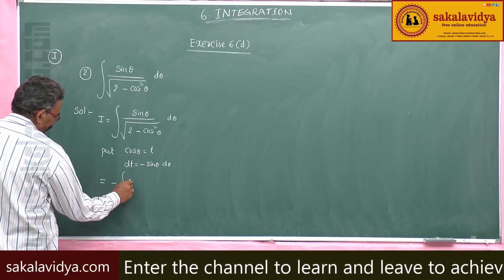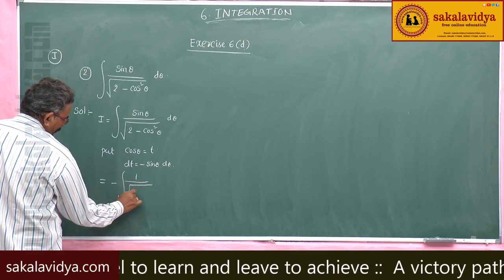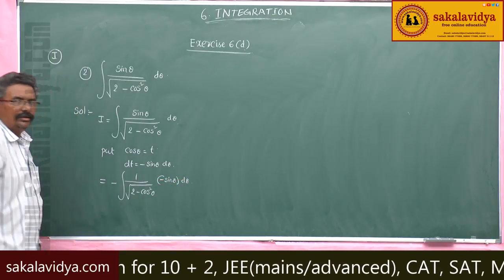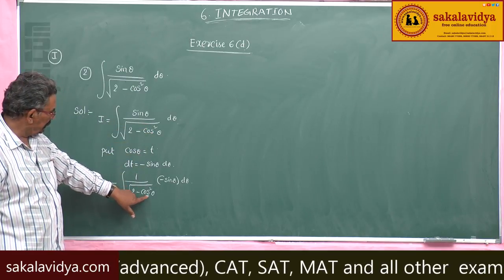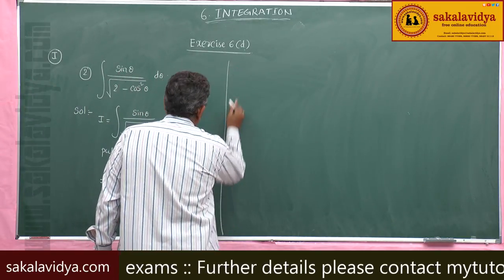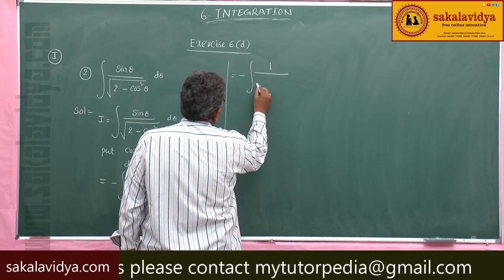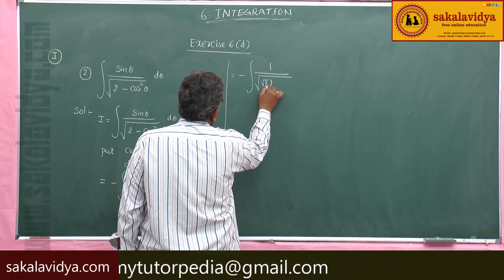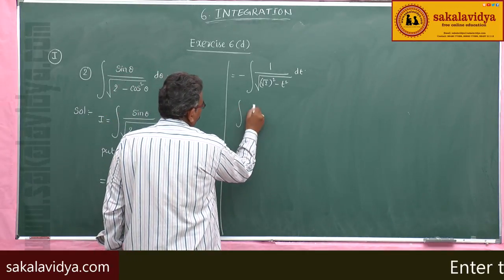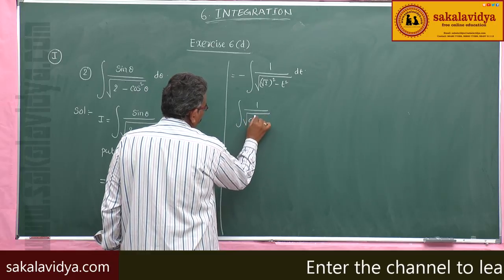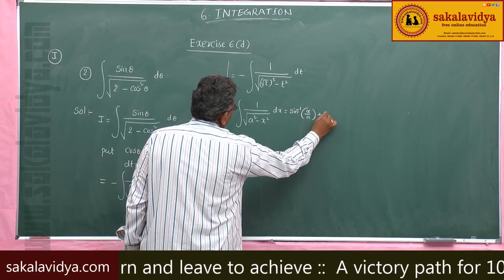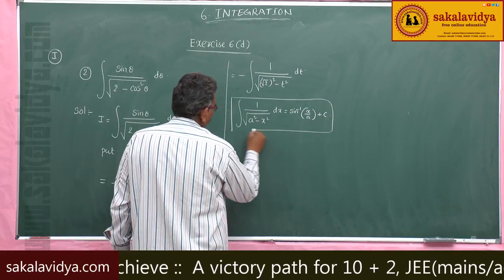Multiplying by minus 1, we get minus integral of 1 by root of 2 minus cos² θ, times minus sin θ dθ. Since cos θ equals t, minus sin θ dθ becomes dt. So this becomes minus integral of 1 by root of (root 2)² minus t² dt. We have the formula: integral of 1 by root of a² minus x² equals sin inverse of x/a plus constant.